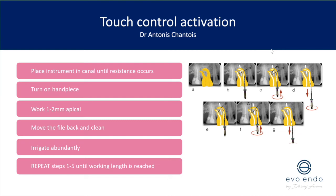You work in one or two millimeter apical segments, then move the file back, irrigate abundantly, and recapitulate with your size 10 hand file, slowly reaching working length in one or two millimeter increments. This is how endodontists can prepare severely curved canals more effectively. The more curved a root canal, the less likely a one-file system will work, because you're trying to open the canal too quickly — you'll get too much debris ahead of the file, or too much resistance from trying to put something large into something very narrow.